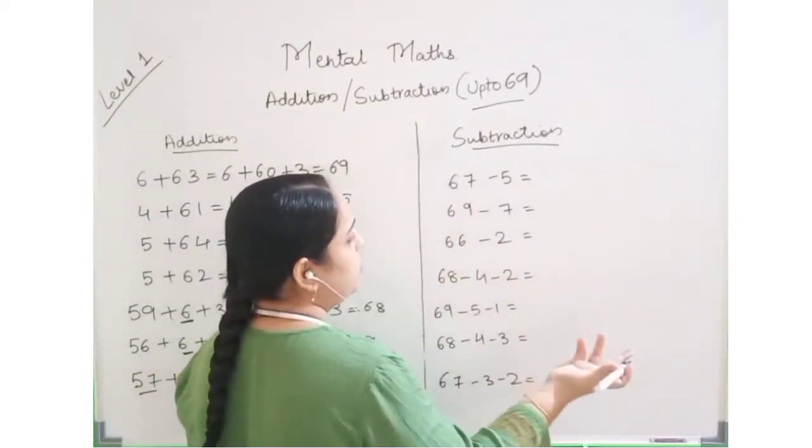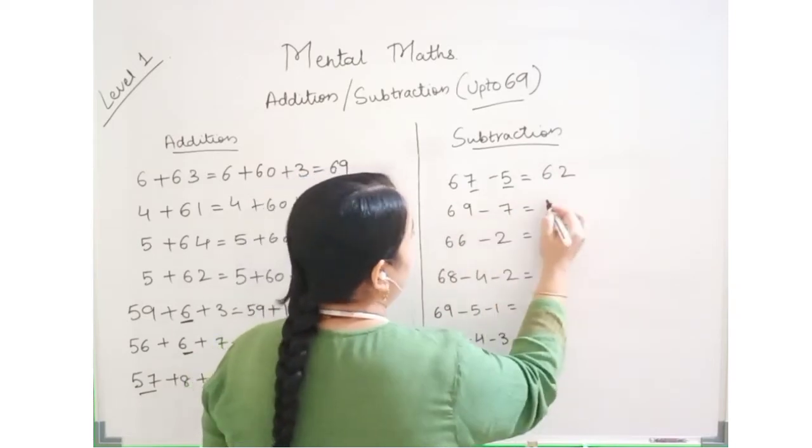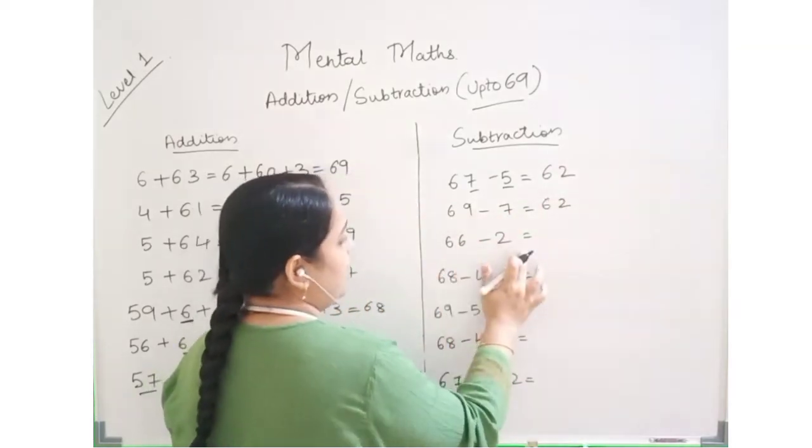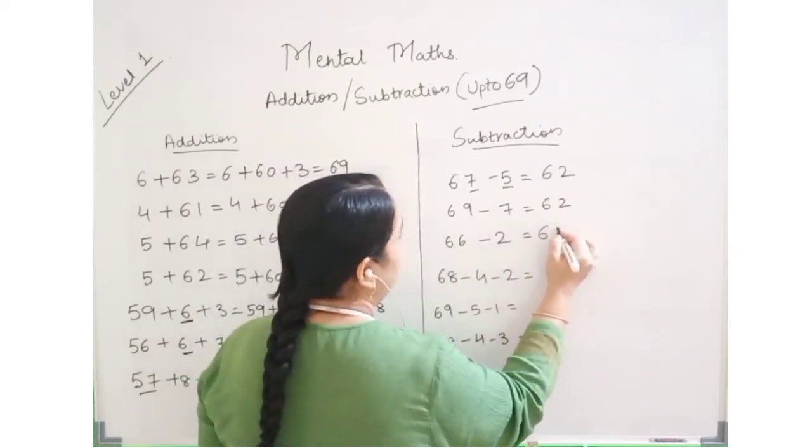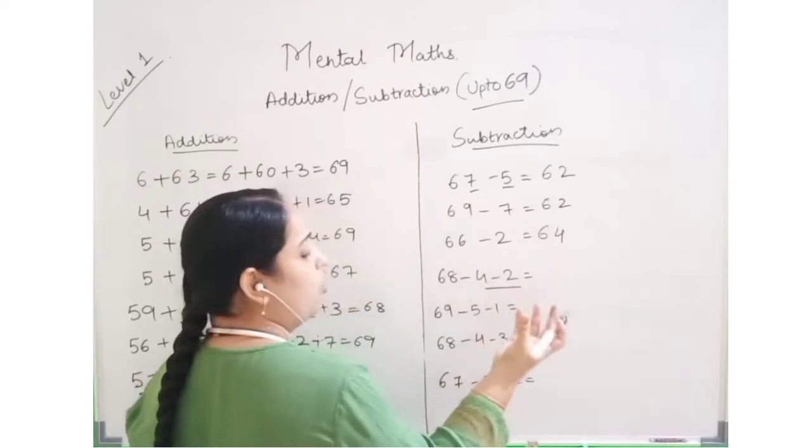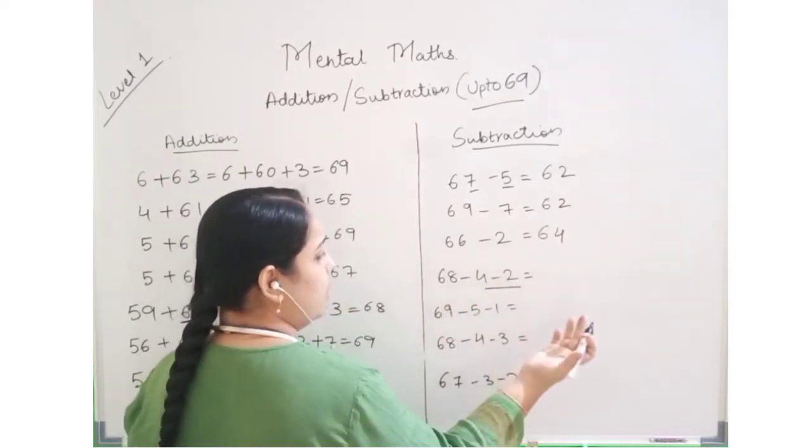Now observe, 69 minus 7 is 62. 9 minus 7 is 2, so 62 is the answer. 66 minus 2: 6 minus 2 is 4, so 64. 68 minus 6 will be 62.